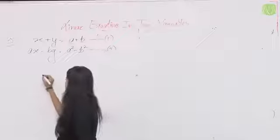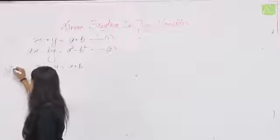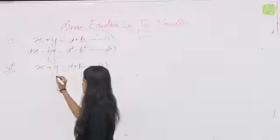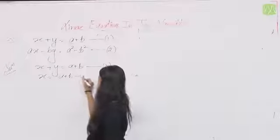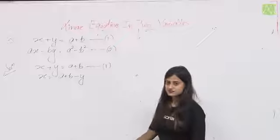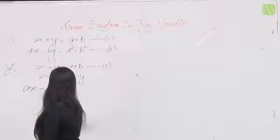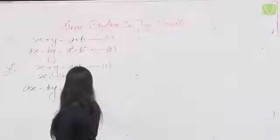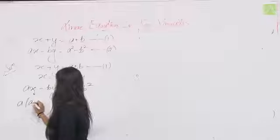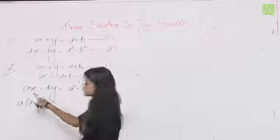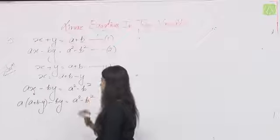From equation 1: x + y = a + b, so x = a + b − y। अब इस x की value second equation में put करते हैं: a(a + b − y) − by = a² − b²।